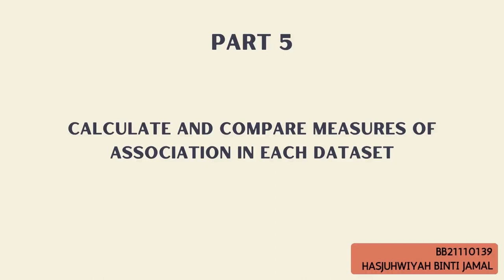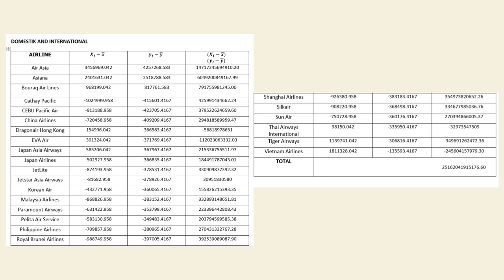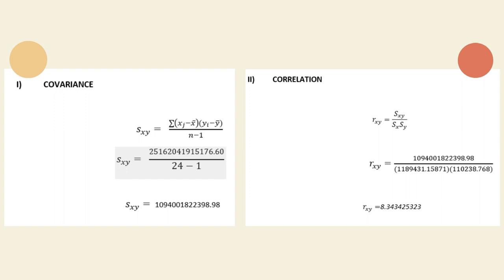Part 5: Calculate and compare measures of association in each dataset. First, to get the covariance, we use the sample covariance formula. Find the amounts based on the table shown, then add all the numbers for all 24 entries. After that, put them into the formula: 25,162,041,915,176.60 divided by n minus 1, or 24 minus 1. So the covariance is 1,094,001,822,398.98.